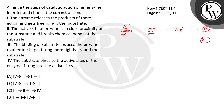So, the substrate binds to the active sites of the enzyme, fitting into the active sites — this is the first step. Second: the binding of the substrate induces the enzyme to alter its shape, fitting more tightly around the substrate — this is the second step. Third: the active site of the enzyme is in close proximity of the substrate and breaks the chemical bonds of the substrate — this is the third step.